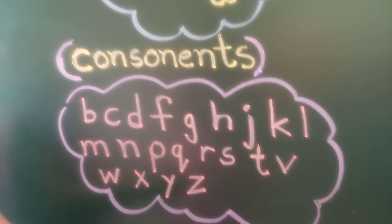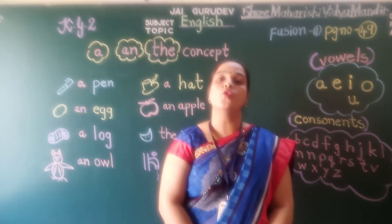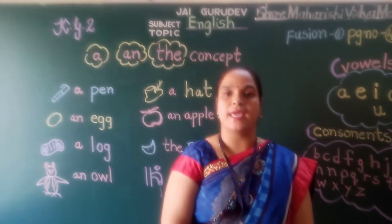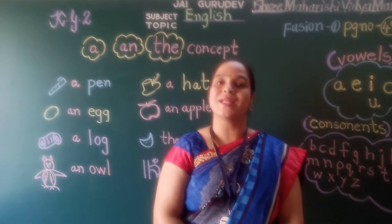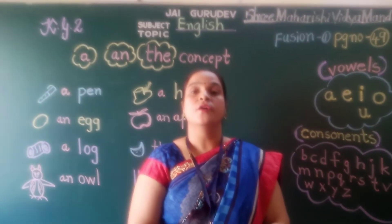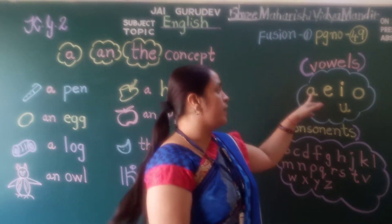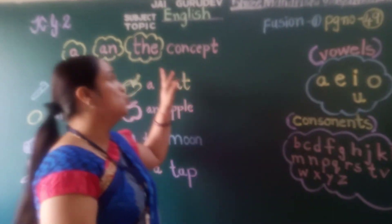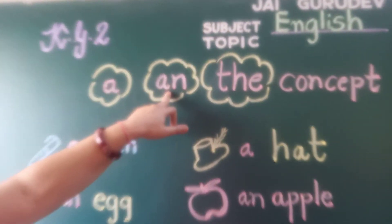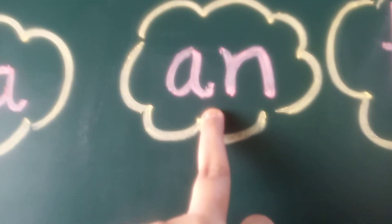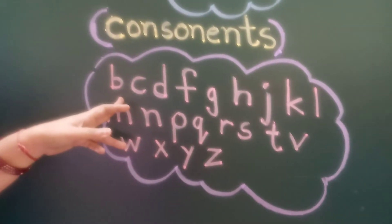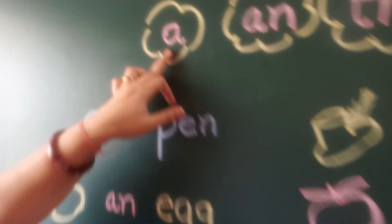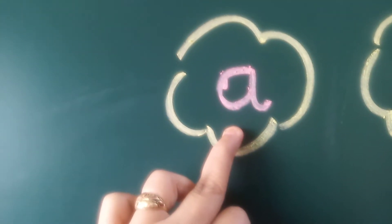Now, how do we use these articles — A, an, and the? One thing you have to remember: in front of the vowels we use 'an', and in front of the consonants we use 'a'.